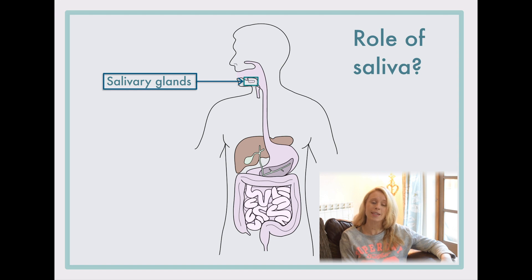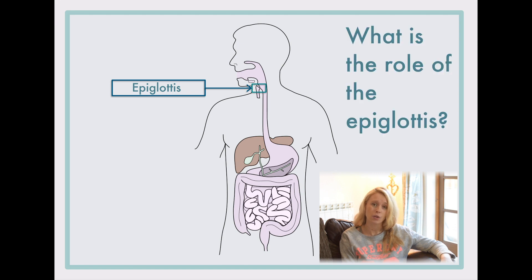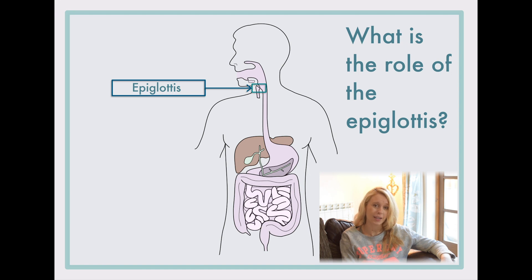Food passes down the esophagus into the stomach. There's an important flap known as the epiglottis. When you swallow, the epiglottis basically closes off the lungs via the trachea, so hopefully food will not pass down into the lungs and cause choking. Always be careful with your swallowing — don't talk while you're eating because food can sometimes get past the epiglottis, and then you'll end up in a not-so-great situation.